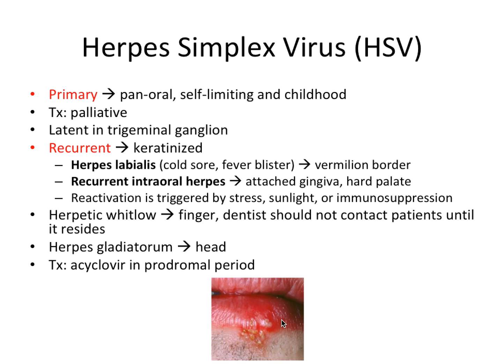Herpes labialis is commonly called a cold sore or fever blister, and it classically appears on the vermilion border between the skin of the face and the lip. We also have recurrent intra-oral herpes, which occurs exclusively on attached gingiva or attached mucosa — specifically the attached gingiva or the hard palate. Note that primary infections are pan-oral, whereas recurrent infections occur only on keratinized tissue, like the vermilion border, attached gingiva, and hard palate — a very commonly tested distinguishing factor.